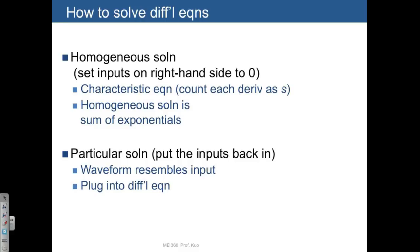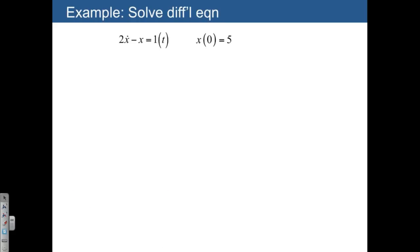Now, this may or may not seem familiar, so I think the easiest thing to do is just to illustrate all of this with some examples. So let's do that with a simple first-order differential equation, where we have 2x dot minus x is equal to the unit step function, 1 of t, with an initial condition that's given to us.